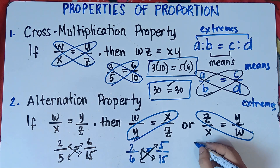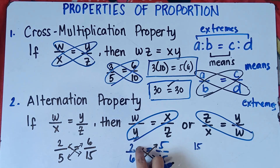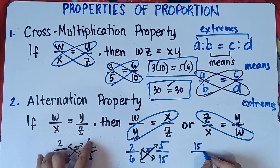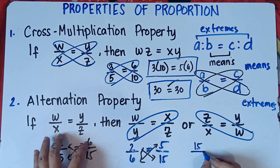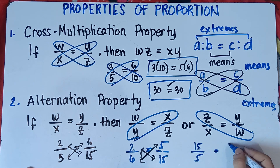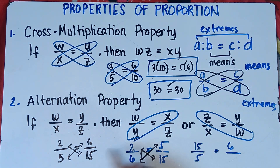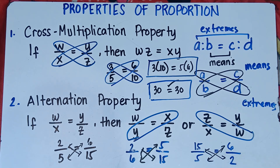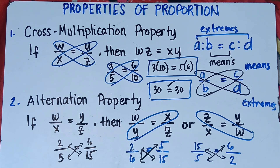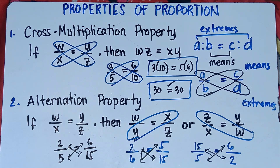Interchanging the extremes: 15 becomes the numerator, copy 5 and 6, and 2 and 15 are interchanged. So 15 over 5 equals 6 over 2. Checking: 15 times 2 is 30, and 6 times 5 is 30. That's it for the alternation property — simply interchange the means or the extremes.